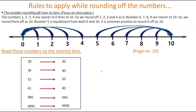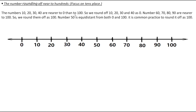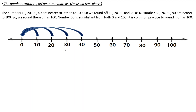Now let's see the rule for rounding off numbers to the nearest 100. We should focus on the tens place. Looking at the number line: 10, 20, 30, and 40 are nearer to 0 than to 100, so we round them off as 0. The numbers 60, 70, 80, and 90 are rounded off to 100. The number 50 is equidistant from both 0 and 100, but we round it off to 100.